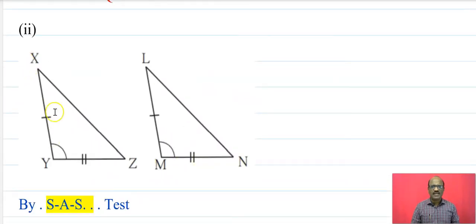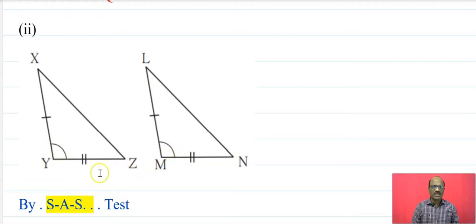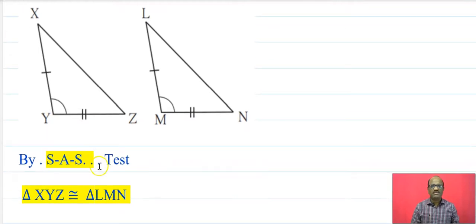Now the next: in triangle XYZ and triangle LMN, segment XY is congruent to segment LM. By the SAS test, these two triangles are congruent. That is, triangle XYZ is congruent to triangle LMN.